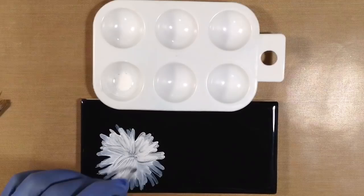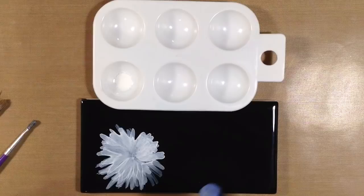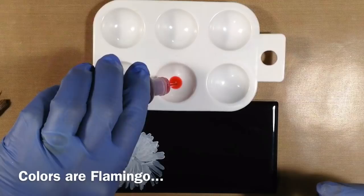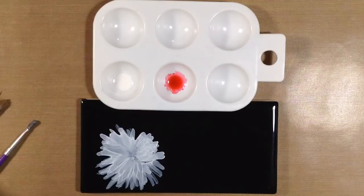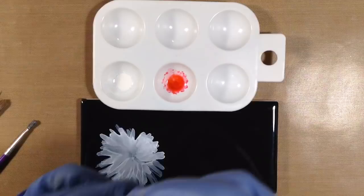Now I'm going to let this layer dry. Now for fun and dimension, I'm going to use three colors. I'm going to use Flamingo, so I'm going to drop a couple of drops in the palette there and thin that down a little bit too. And some Shell Pink.